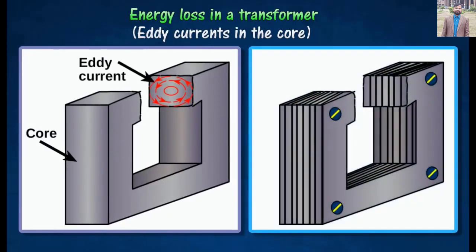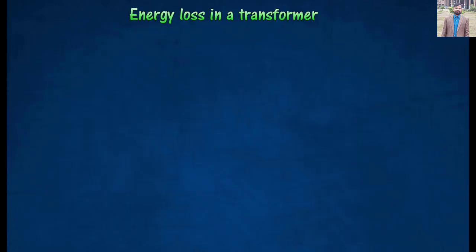As well, new transformer core designs are emerging that use amorphous metal instead of the traditional silicon steel. These amorphous core transformers, available from major transformer manufacturers including GE, ABB and Howard transformers, offer up to 80% lower core losses than conventional transformers.